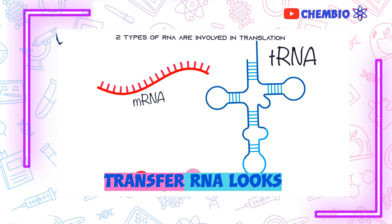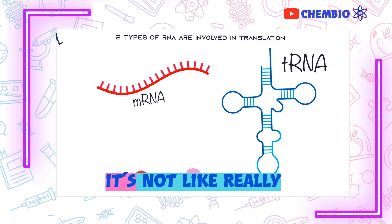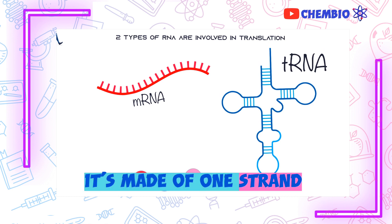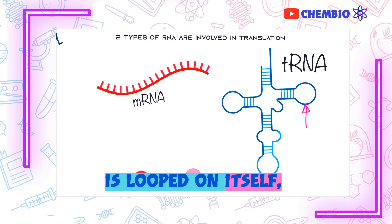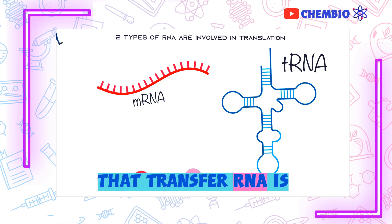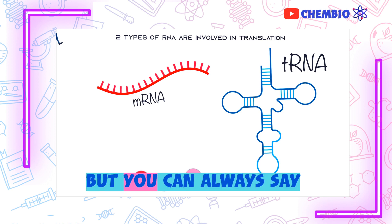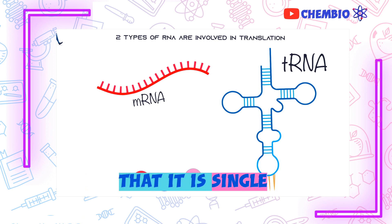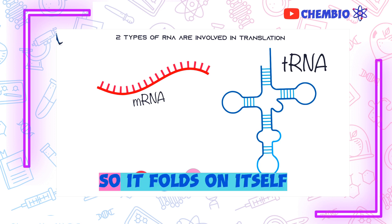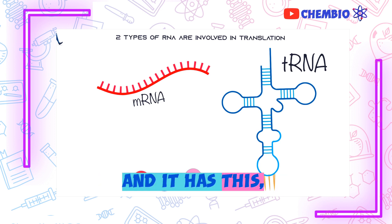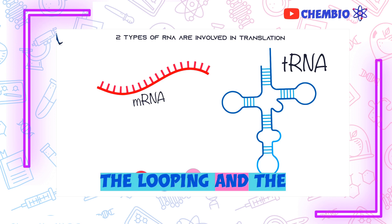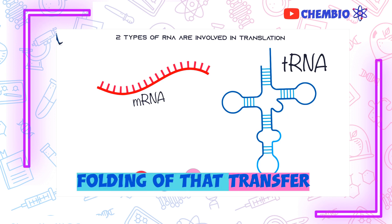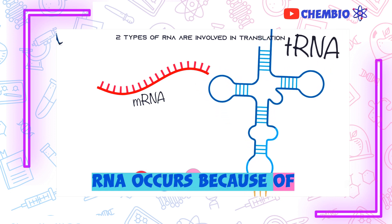In real time, transfer RNA looks something like this. As you can see, it's not really single-stranded in appearance. It's made of one strand of RNA, but this strand of RNA is looped on itself. So you can't really say that transfer RNA is double-stranded, but you can say it is single-stranded with some folding — it folds on itself and has this clover-shaped structure.